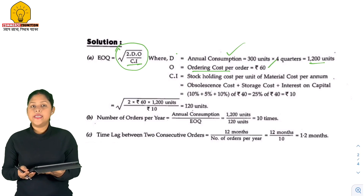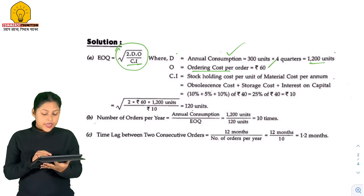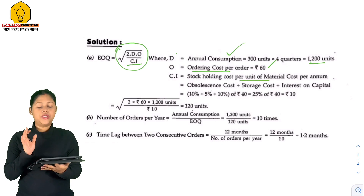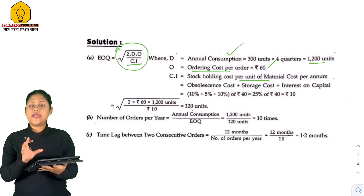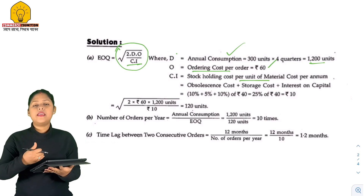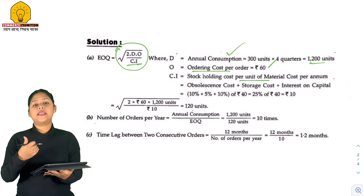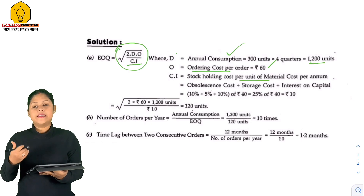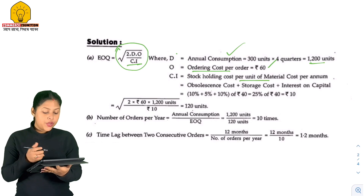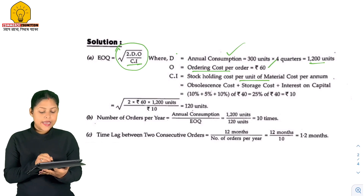CI means stock holding cost per unit of material. This means holding cost, also called carrying cost. If it is worth less than the expense, then we can receive CI.